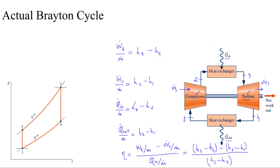After a lot of developments, the efficiencies are now up to 80 to 90 percent for the turbines and compressors in gas turbine power plants. If we were to look at the TS diagram when irreversibilities start taking effect, the entropy starts increasing for that process. We're only going to consider the irreversibilities for processes 1 to 2 and 3 to 4.